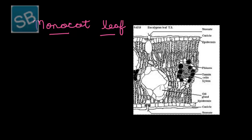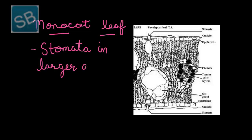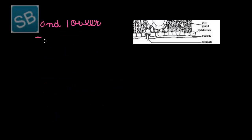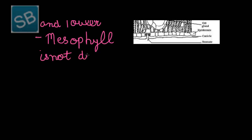Unlike dicots, the monocot possesses stomata in larger amounts in both upper and lower epidermis, which is unlike dicots where stomata are present more in the lower epidermis than the upper. In monocots, the mesophyll is not differentiated into palisade and spongy. Also, the cuticle layer and chloroplasts are absent in certain cells.